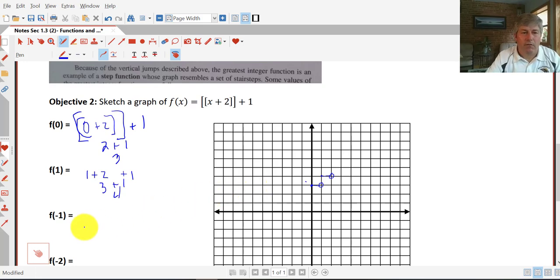We also have some inputs of negative 1. So negative 1 plus 2 plus 1, we get an output of 2. When we input negative 1, we output 2.